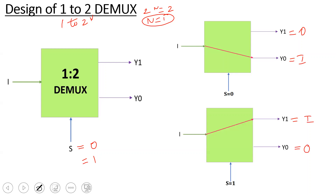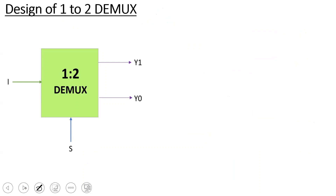We will start with the problem statement, then the truth table, and then derive the Boolean expression, which gives us the circuit diagram. The truth table has columns S, I, Y1, and Y0.